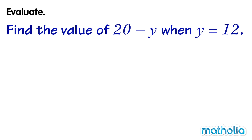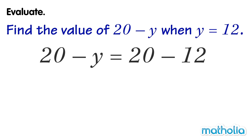Find the value of 20 minus y when y equals 12. If we put 12 in place of y, we get 20 minus y equals 20 minus 12. 20 minus 12 equals 8. So when y equals 12, 20 minus y equals 8.